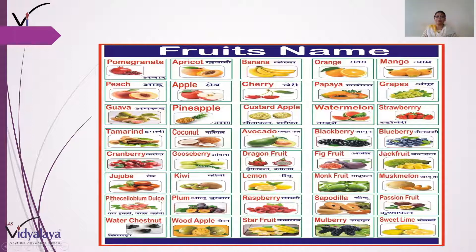Aamla, jo khatta meetha sa, bhoat hi mazedaar lagta hai — chutney, achar, aur candy khate ho. Usko gooseberry bolte hain. Kiwi ko Hindi mein bhi kiwi hi kehte hain, kyunki yeh ek videshi phal hai. Plum, yaani aloo bukhara.